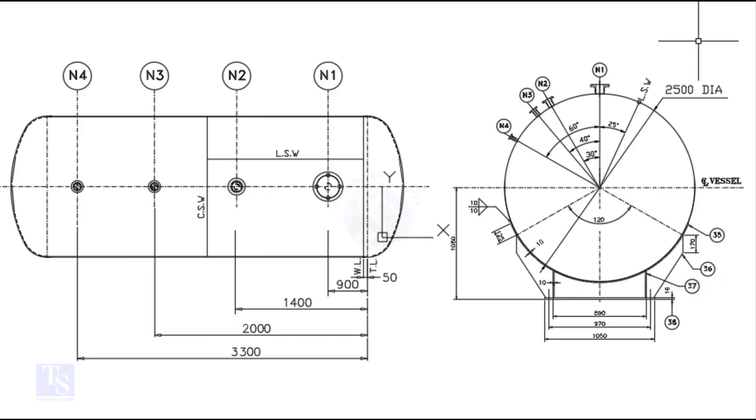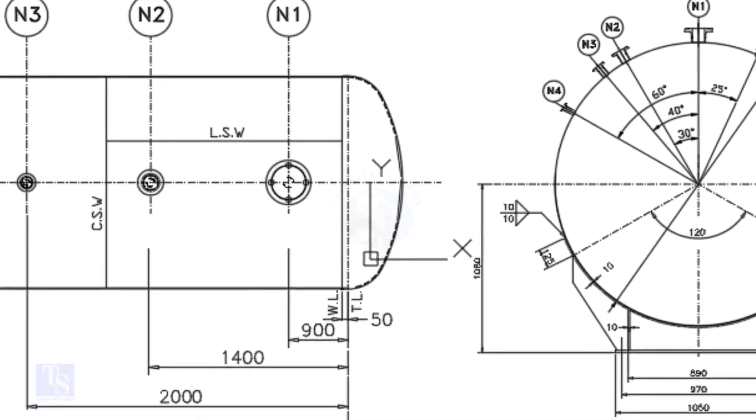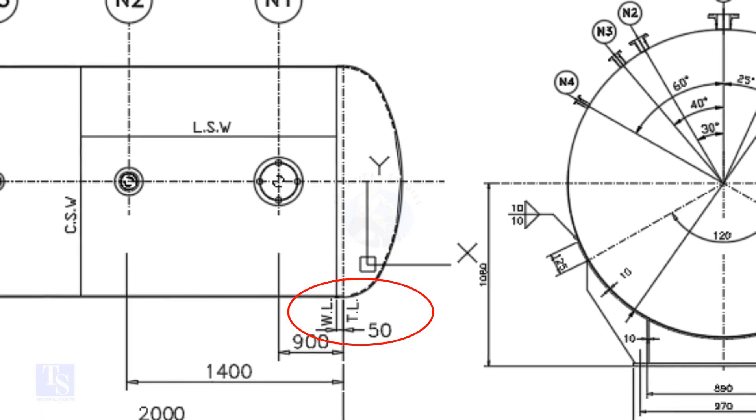Let us have a look at the drawing. Please note that I draw this drawing for teaching purposes only. What is TL and WL? TL stands for tan line and WL stands for weld line.